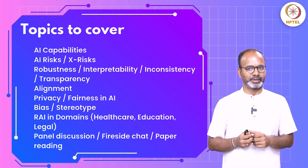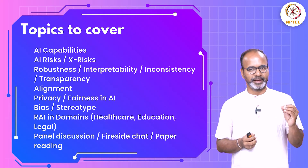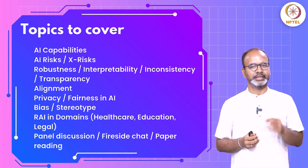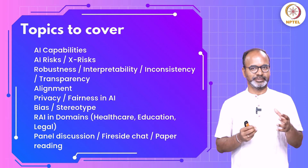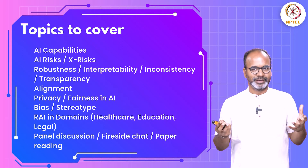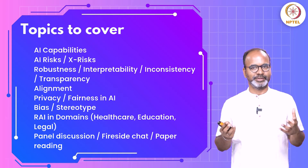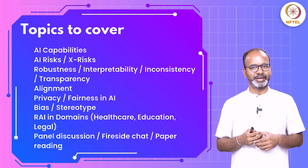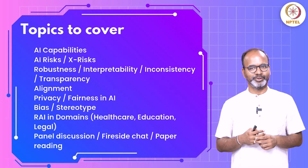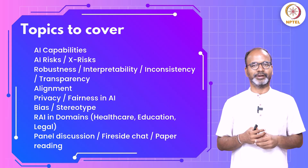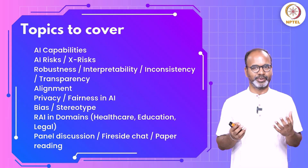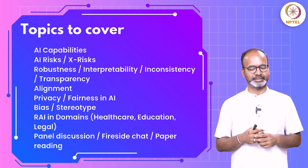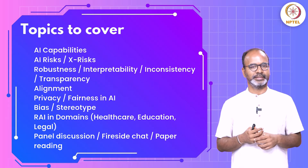The set of topics we'll cover: the first part is AI capabilities. Next, we'll cover AI risks and existential risk — if these technologies become better and better, will there be a point when human beings have to worry that AI systems will take over us? That's the existential risk.